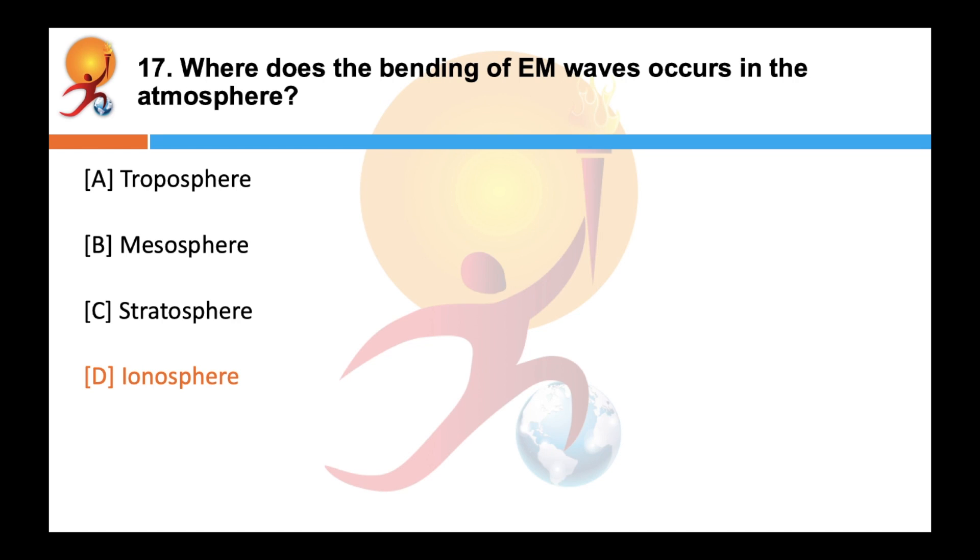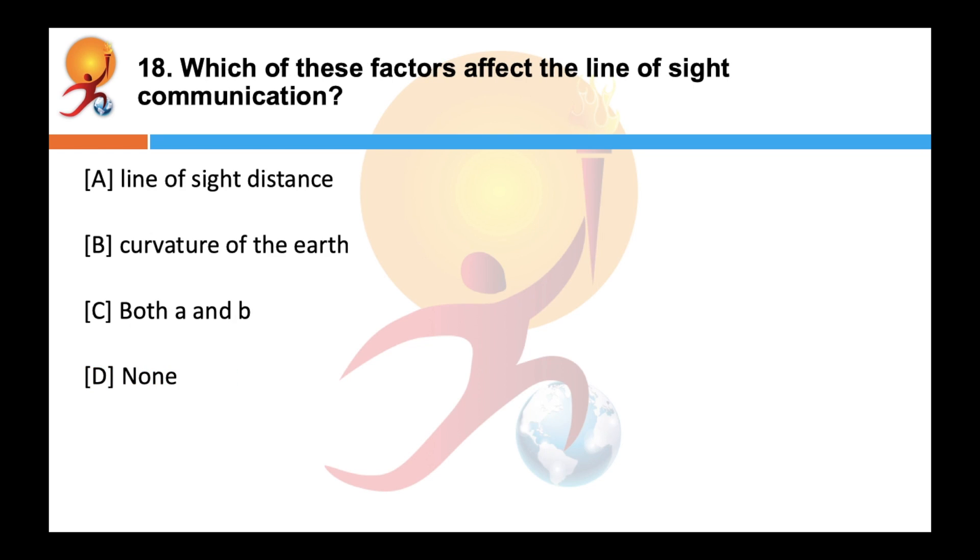This is helpful in sky wave propagation. Which of these factors affect the line of sight communication? Correct answer is C. The line of sight communication is affected by A, the line of sight distance, and B, the curvature of the earth. The space waves are used for line of sight communication such as television broadcast, microwave link and satellite communication.